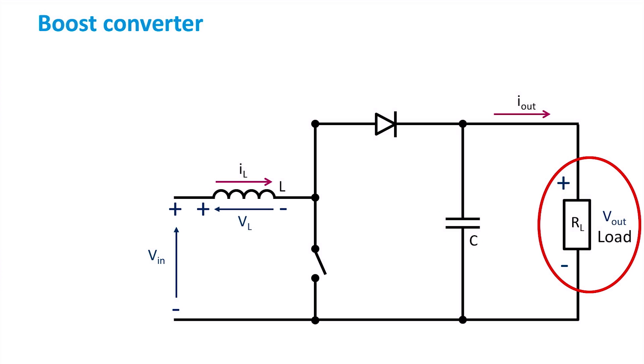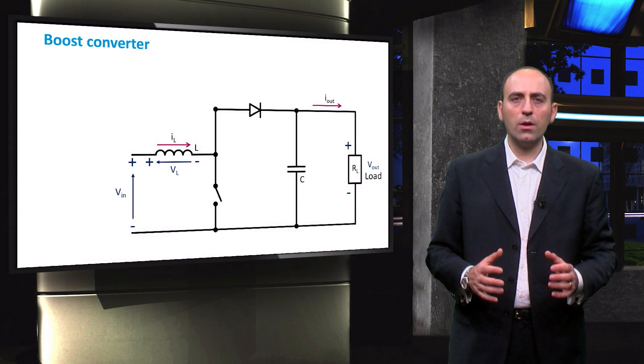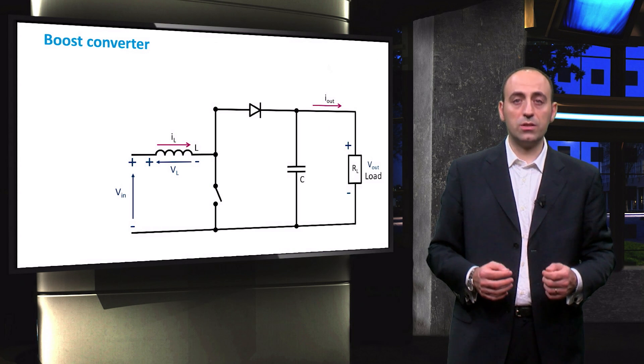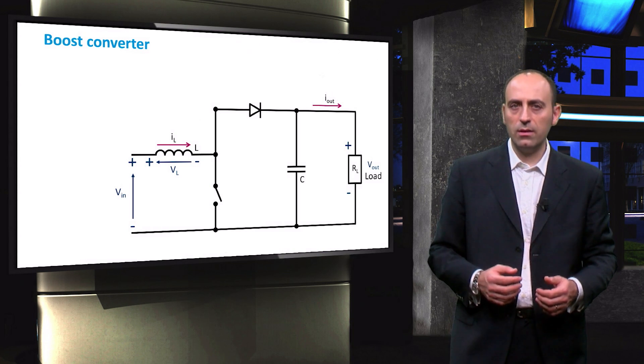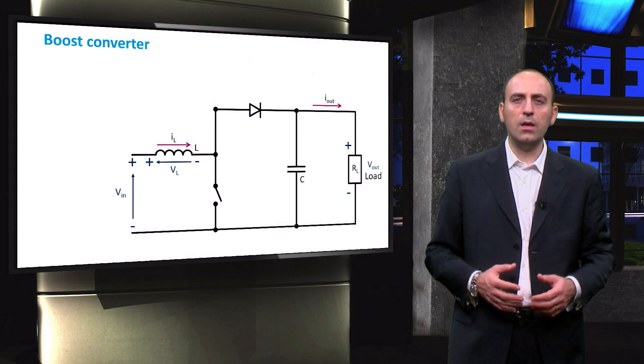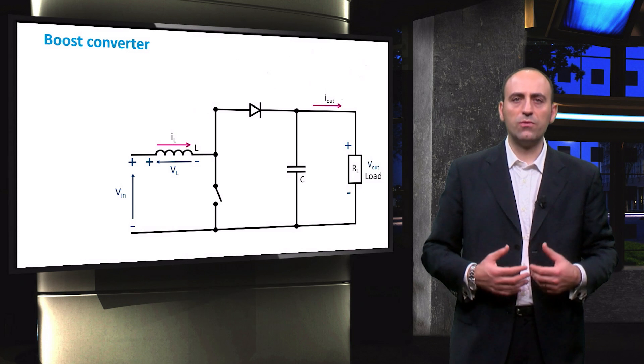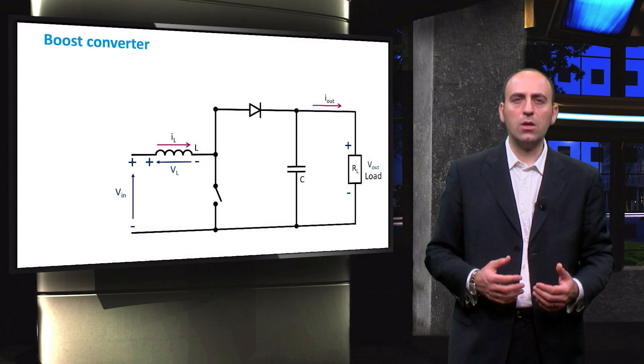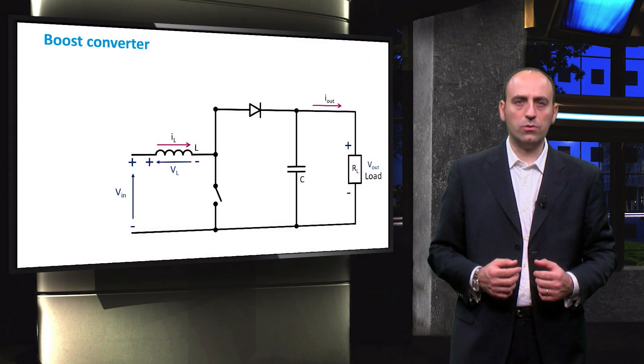Basically, the elements used are the same as the buck converter, but the topology is different. The working principle is that energy stored in the inductor while the switch is on is later released against the higher output voltage Vout. In this way, energy is transferred from a lower voltage from the PV panels to a higher voltage required by the load.